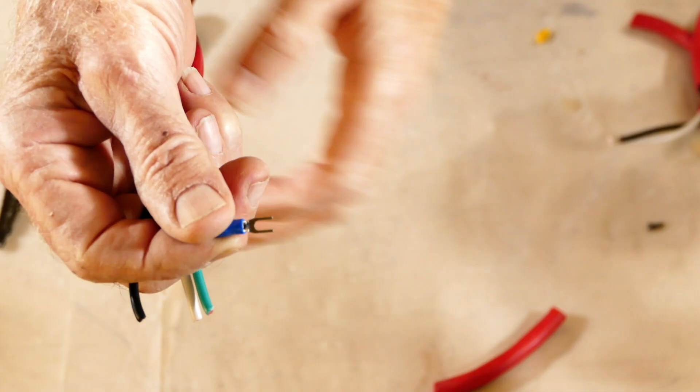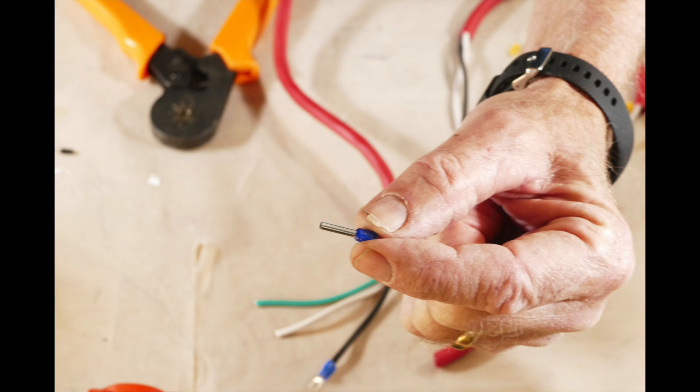To make the connections, it's best to use either a spade crimp terminal or a ferrule type terminal. I prefer using a ferrule, but this is a totally personal preference.